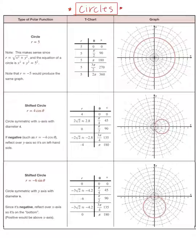Going back to r equals 4 cosine θ: if that becomes negative 4 cosine θ, you get the same circle but flipped to the left-hand side of the y-axis. The same thing applies to r equals negative 6 sine θ — if you graph r equals positive 6 sine θ, you get the same circle on top of the x-axis.